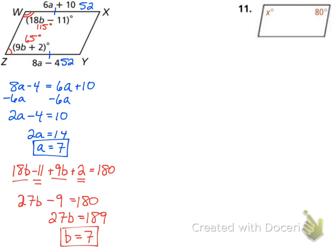With the second problem, X and 80 degrees are consecutive angles, so they add up to 180, meaning X equals 100. Since opposite angles must be equal, the angles are 100, 100, 80, and 80.